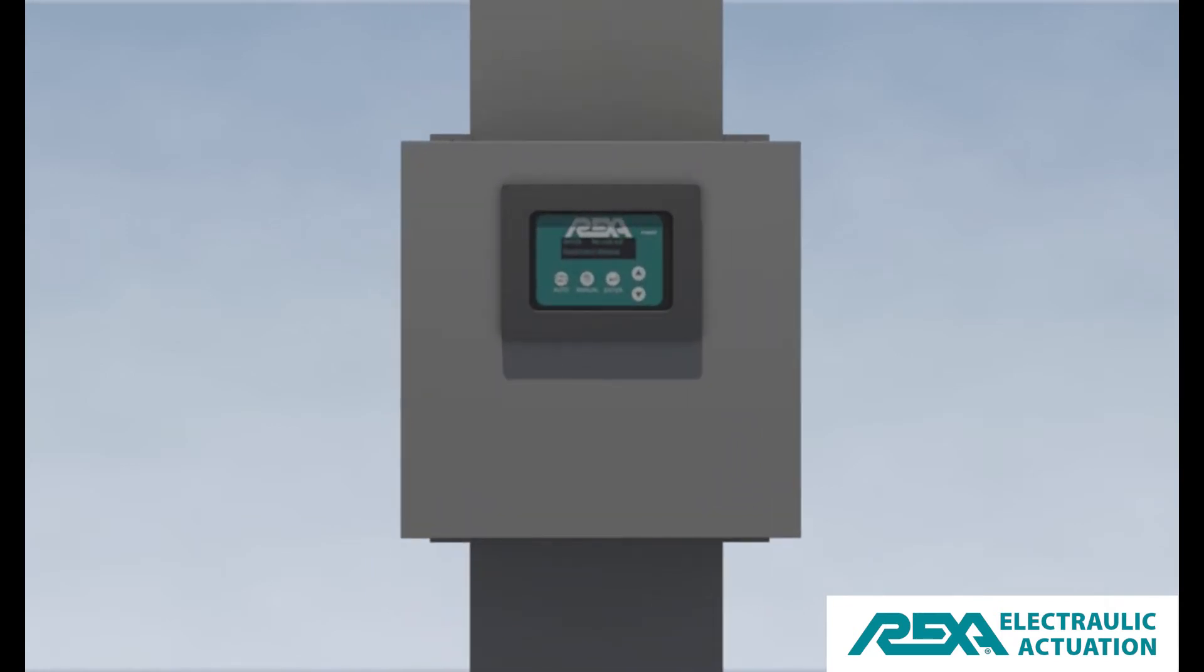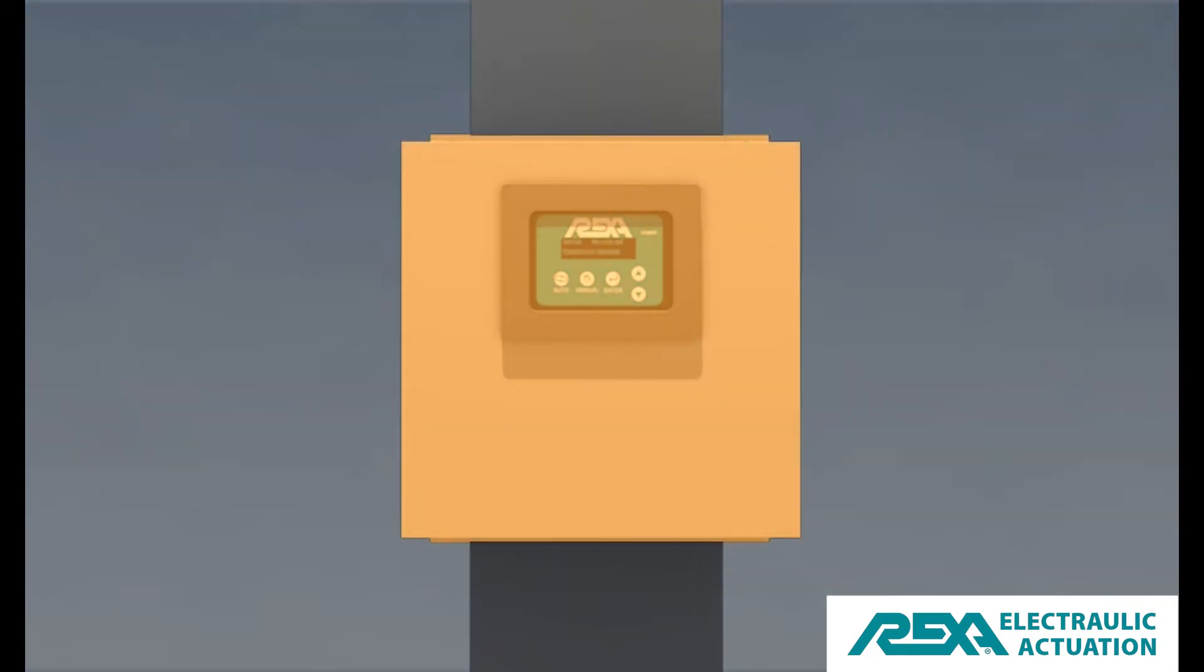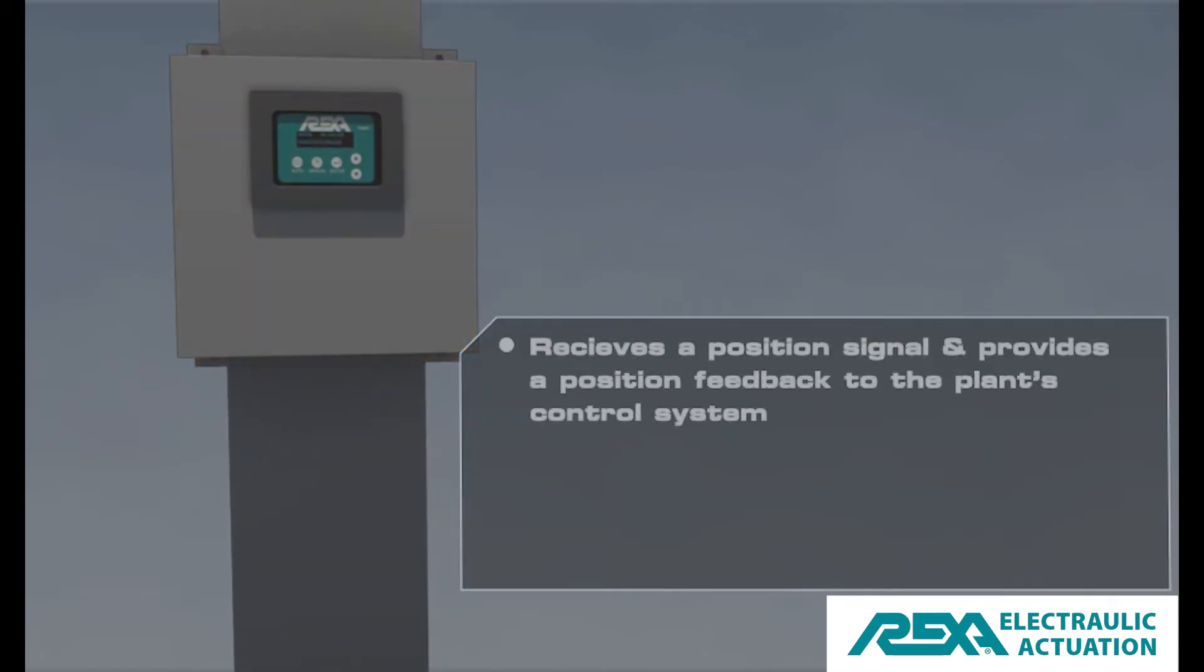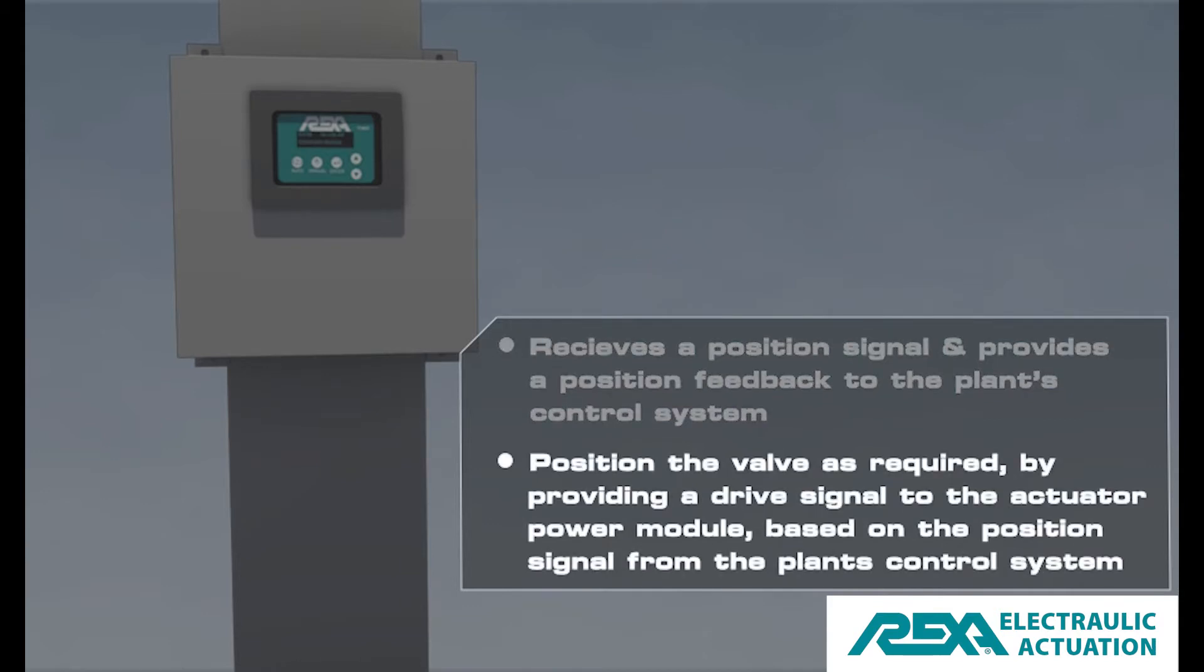The REXA actuator interfaces with the plant's control system through the local control enclosure. The control enclosure receives a position signal and provides position feedback to the plant's control system. Its other function is to position the valve as required by providing a drive signal to the actuator power module, based on the position signal from the plant's control system compared to position feedback from the actuator's cylinder.